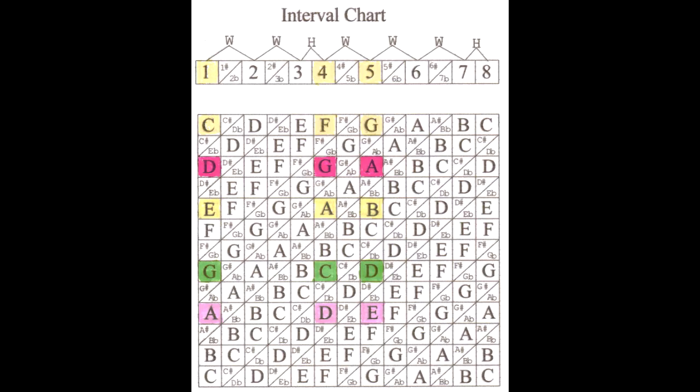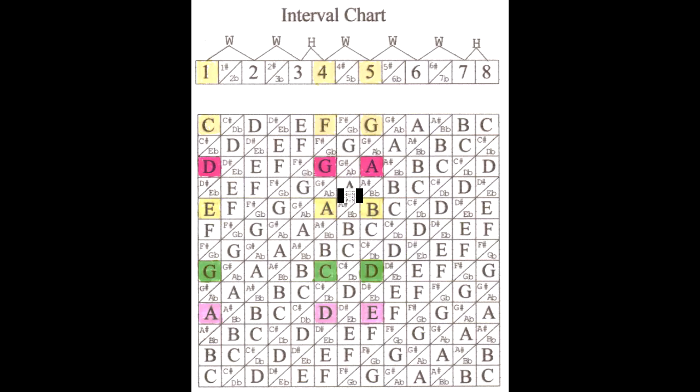In the key of G, the 1, 4, 5 chords are the G, C, and D chords. In the key of A, the 1, 4, 5 chords are the A, D, and E chords.